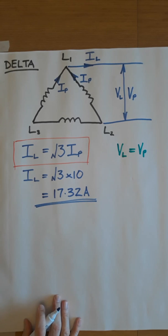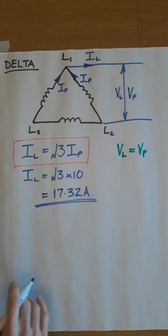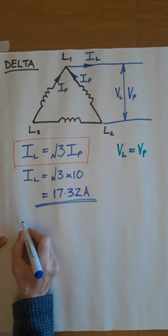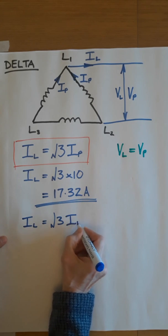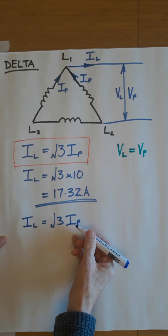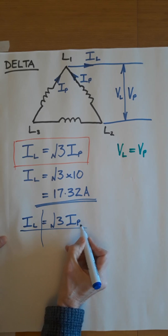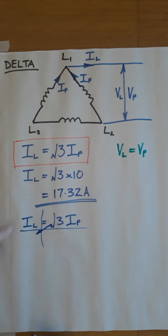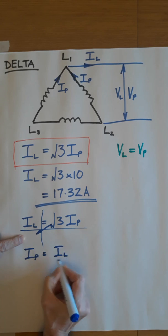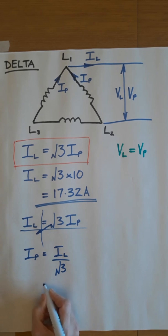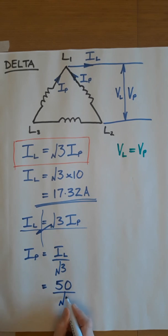Let's do that the other way around, and I'll choose a different value. Let's suppose that I now want you to find the phase current. We're going to start with the same formula, IL equals root 3, IP. And it's the phase current that we want. So if we transpose this to leave IP on its own, the root 3 needs to appear underneath IL. So IP equals IL over root 3. Put the numbers in. Let's suppose that the line current is 50 amps. 50 over square root of 3. If you put that in your calculator, you should come out with 28.9 amps.